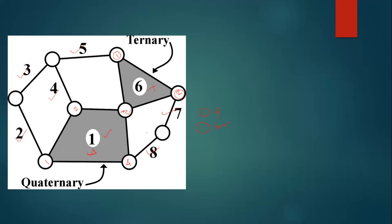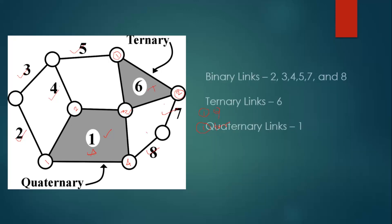Finally, we have one quaternary link, one ternary link, and six binary links - links 2, 3, 4, 5, 7, and 8. Link 6 is called a ternary link because it has three nodes, and link 1 is called a quaternary link because it has four nodes.